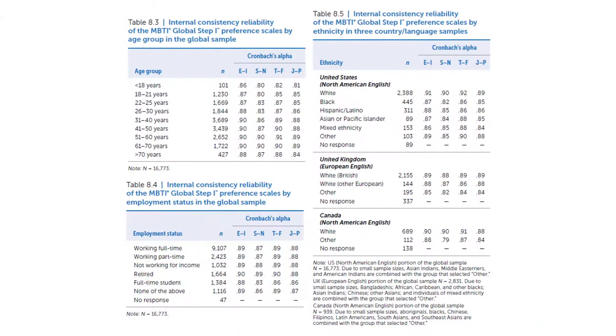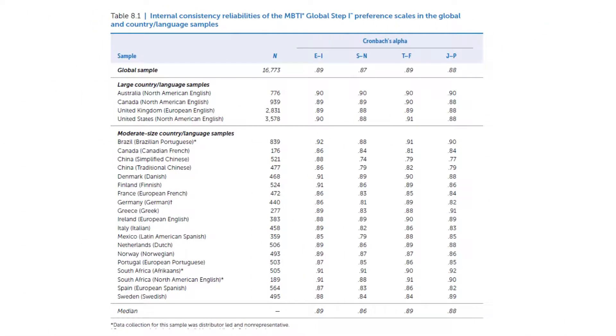In addition to overall reliability, we look at reliability within key groups. For the MBTI global, we looked at whether reliability is consistent across gender, age, employment status, and different ethnic groupings. We also examined this in countries outside the United States using different ethnic categories appropriate for those local areas. Finally, the reliability estimates are shown for all the different countries and language samples included in that analysis.